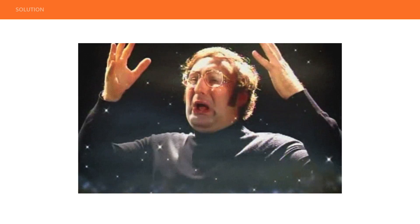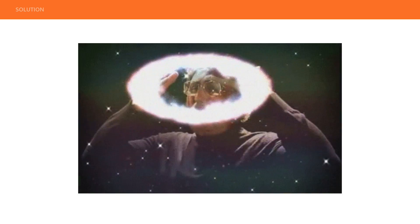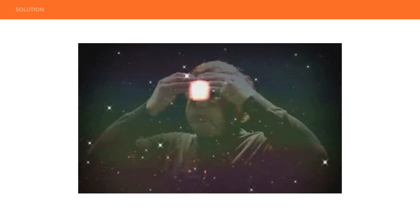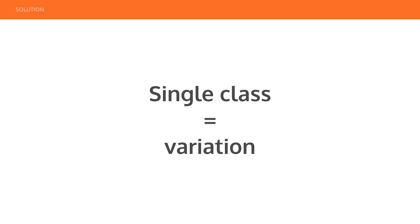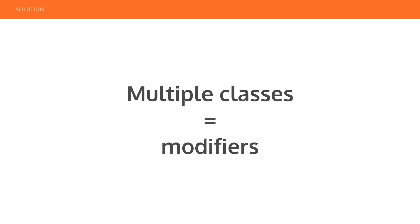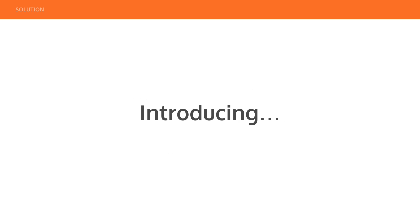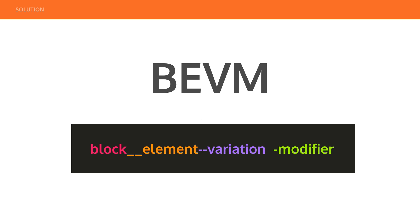We've been stuck with a syntax that hasn't allowed us to freely express our code. So what it leads to is: let's think of a single class as a variation, and multiple classes for your modifiers. If you take those thoughts, you get BEVM — Block Element Variation Modifier. It looks confusing but it makes life so much simpler.